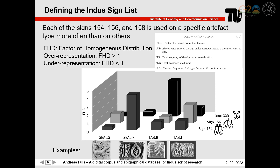The statistical analysis of sign-sequence frequencies is complicated by the heterogeneous distribution of artifact types. For this reason, a factor of homogeneous distribution was developed that takes the different frequencies of artifact types into account. It equals 1 for a perfect homogeneous distribution, greater than 1 for overrepresentation, and smaller than 1 for underrepresentation. As shown in the diagram, sign 154 occurs about four times more often than expected on rectangular seals, sign 156 two times more often on incised tablets, and sign 158 four times more often on bas-relief tablets. This is the reason to keep these three signs distinct in the sign list, rather than merging them into one sign as proposed by Mahadevan and Parpola.